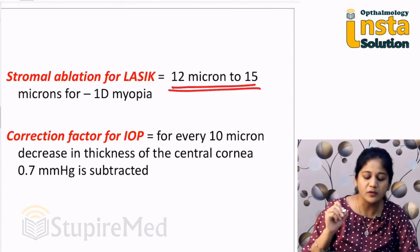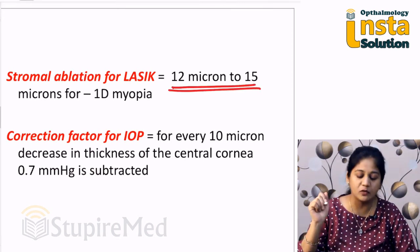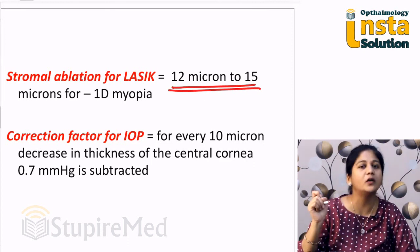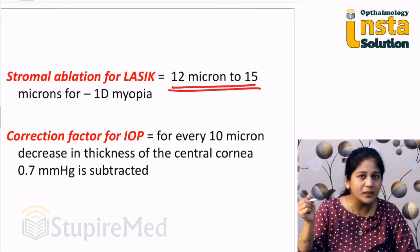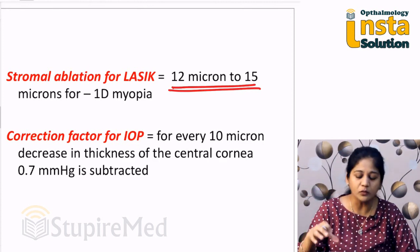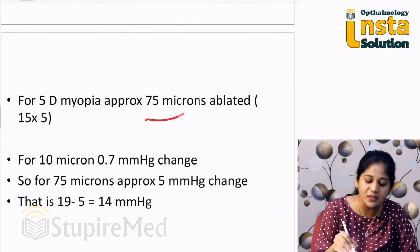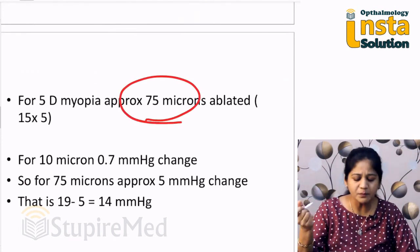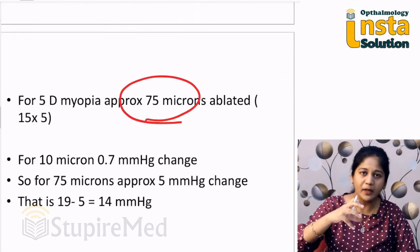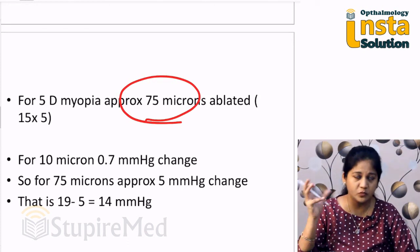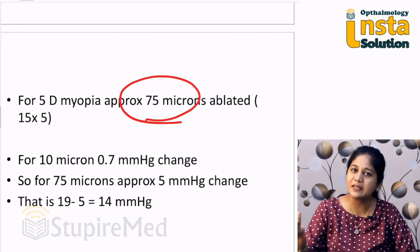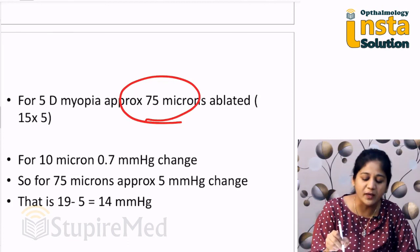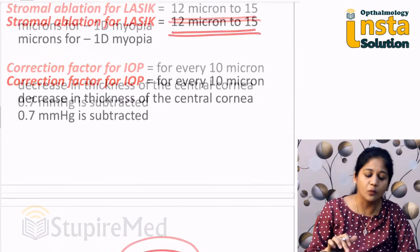When you do stromal ablation, you ablate approximately 12 to 15 microns for correction of minus 1 diopter of myopia. So if you want to correct minus 5 diopters, how much should be ablated? Simple mathematics: for 1 diopter, 15 microns; for 5 diopters, approximately 75 microns.